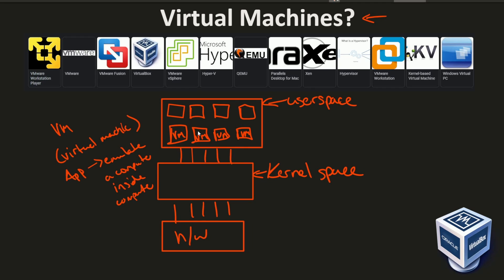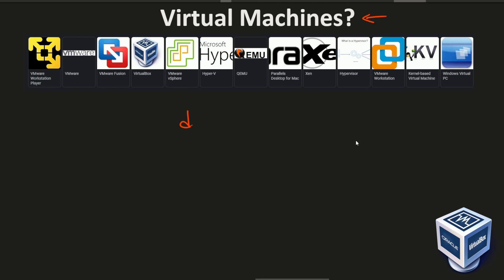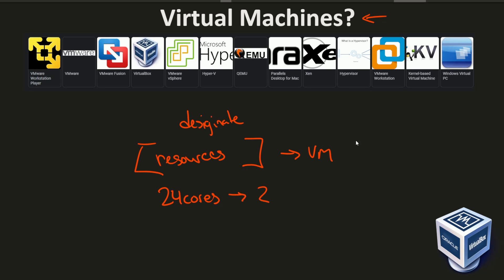You might be asking, how can this be done? Doesn't my computer need access to the resources? Well, you're exactly right. But what happens is you get to specify and allocate a specific amount of resources for your virtual machine. For example, let's say you have 24 cores on your processor — do you want two cores to be used? Four? Six? You get to specify that for the virtual machine itself. That way it's not taking over all of your computer's resources, leaving it useless.